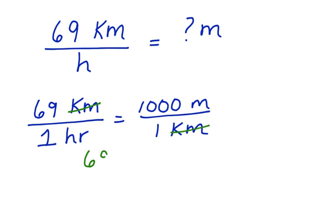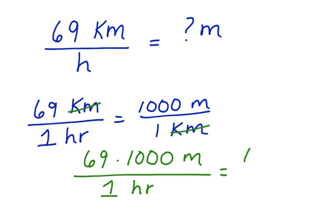So now we have 69 times 1,000 meters in our numerator, and we have 1 hour in our denominator. 69 times 1,000 is 69,000 meters per one hour. This is our answer, and our work is complete.